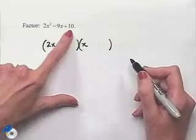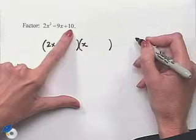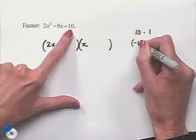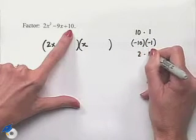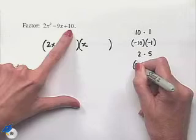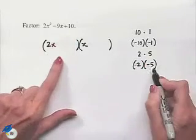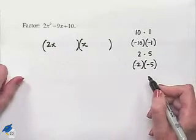Next, we're going to look at the constant term. We need to come up with factors that will give us positive 10. Our choices are 10 times 1, negative 10 times negative 1, 2 times 5, and negative 2 times negative 5. We want to try these in our factorization to see which ones could work.